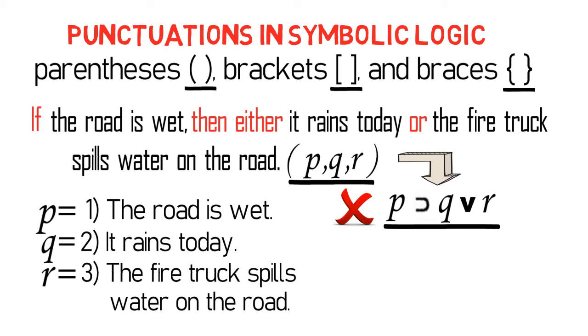And so, if we analyze the proposition, it would become clear that it is a conditional proposition whose consequent is an inclusive disjunction. Now, for this reason, we need to punctuate the consequent.